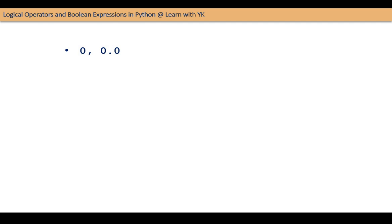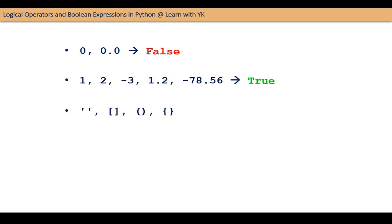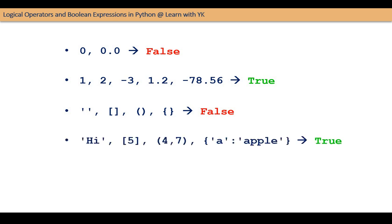In Python, numbers can also be treated as boolean expressions. 0 is considered FALSE and any non-zero number is considered TRUE. Similarly, any empty object, empty string, or tuple, list, set, dictionary, etc. is considered FALSE, and any non-empty object is considered TRUE. The keyword NONE is also considered FALSE. Sometimes we need to evaluate expressions involving such values and logical operators. To evaluate such expressions with ease, let us understand the working of AND and OR operators in a simpler way.